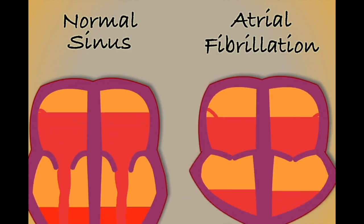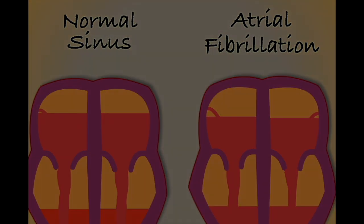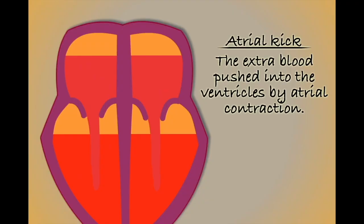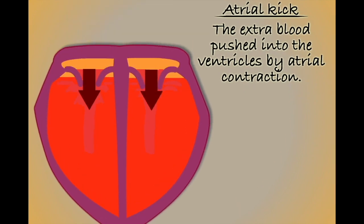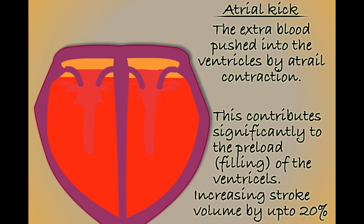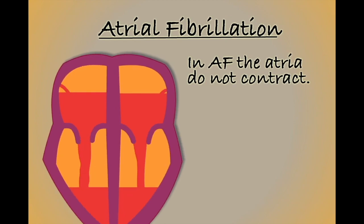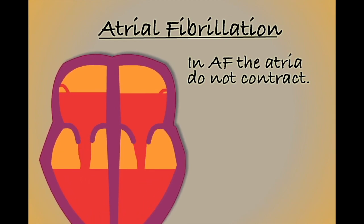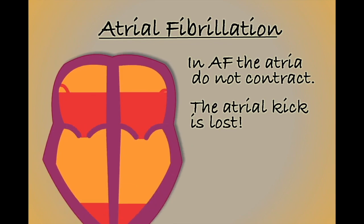Ineffective atrial contractions can have many consequences for sufferers — for example, a loss of atrial kick. During normal electrical conduction, the atrium squeezes additional blood into the ventricles just before they contract. This additional blood is referred to as the atrial kick. In AF, this additional bolus of blood is lost, resulting in a reduced stroke volume per beat.